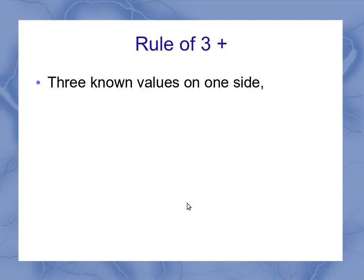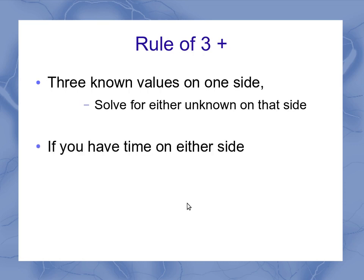So when I'm solving them, I have a rule of three plus. I still have the fact that if I have three known values on one side, either the x side or on the y side, that I can solve for the unknowns on that side. But I also have that once I know the time on either side, I automatically use the same value for time on the other side. So that's going to help me solve some of these problems as well.